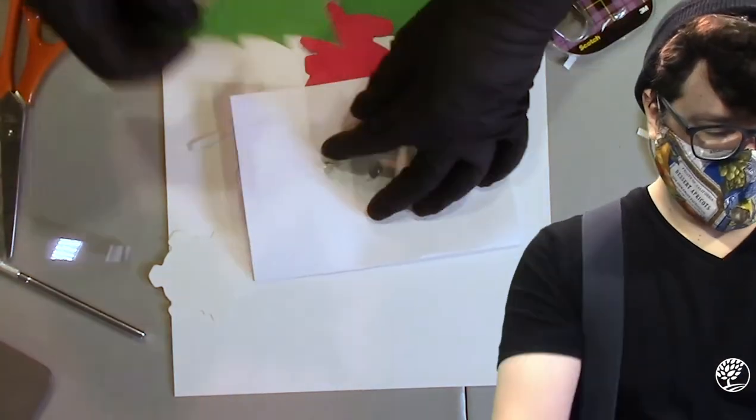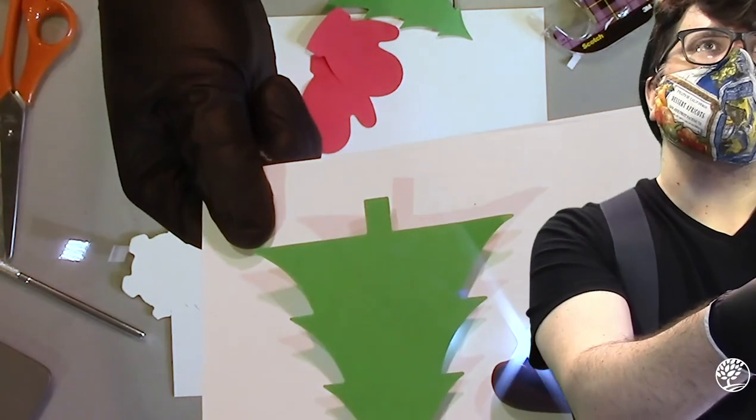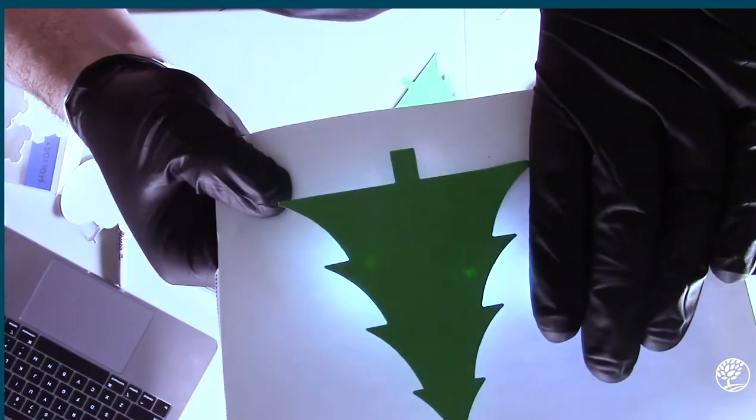Take your cardstock shape and stick it down to the card, covering one or more of the LEDs. When you turn the LEDs on, you should see a neat backlit effect.